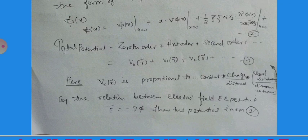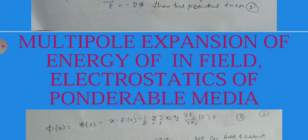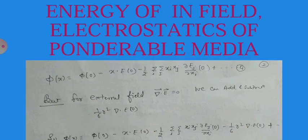Using E = -∇φ, we can write: φ(x) = φ₀ - x·E₀ - (1/2)Σᵢ Σⱼ xᵢxⱼ (∂Eⱼ/∂xᵢ)|₀. For the external field, ∇·E = 0. Since the electric field is conservative, the curl of E is zero, so we can add or subtract a term involving ∇·E. We choose this term to be (1/6)r² times ∇·E₀.